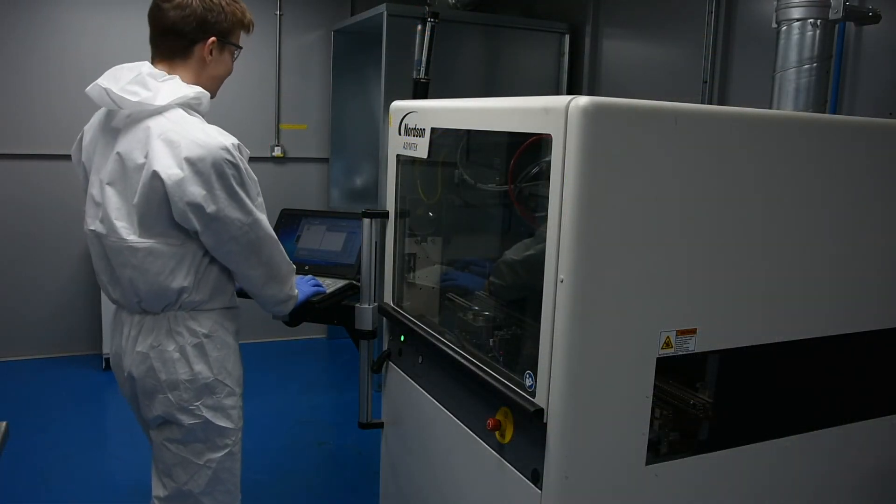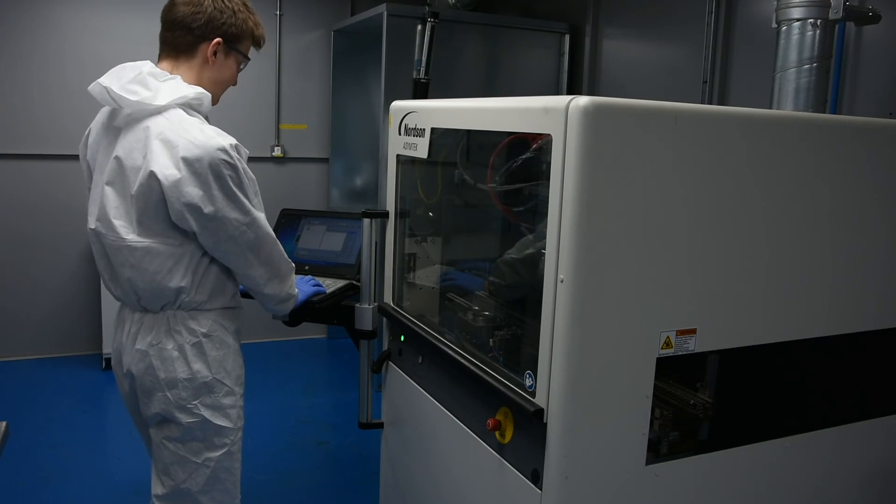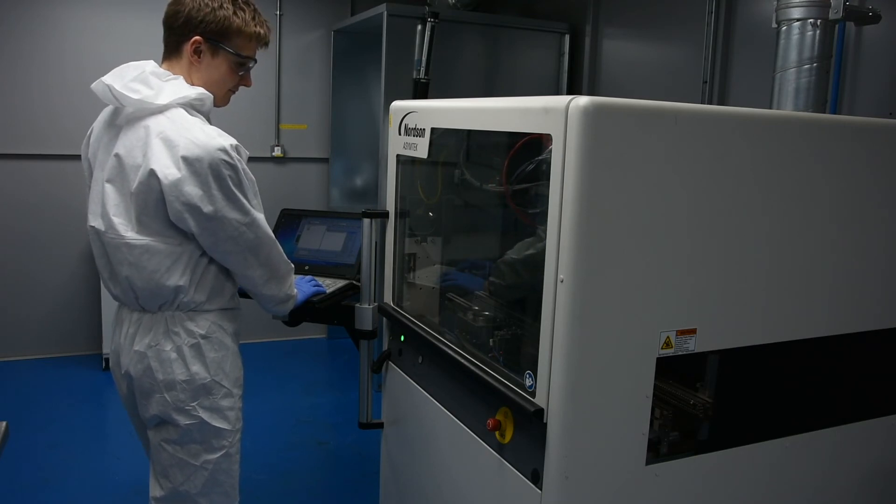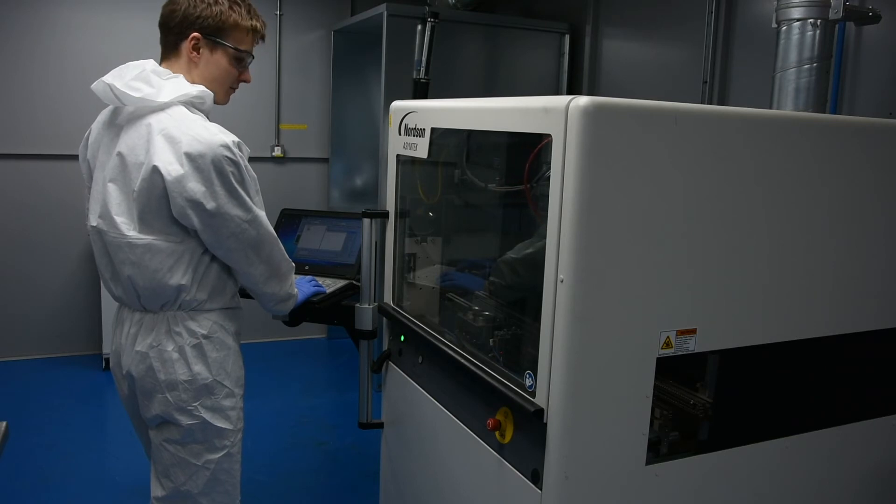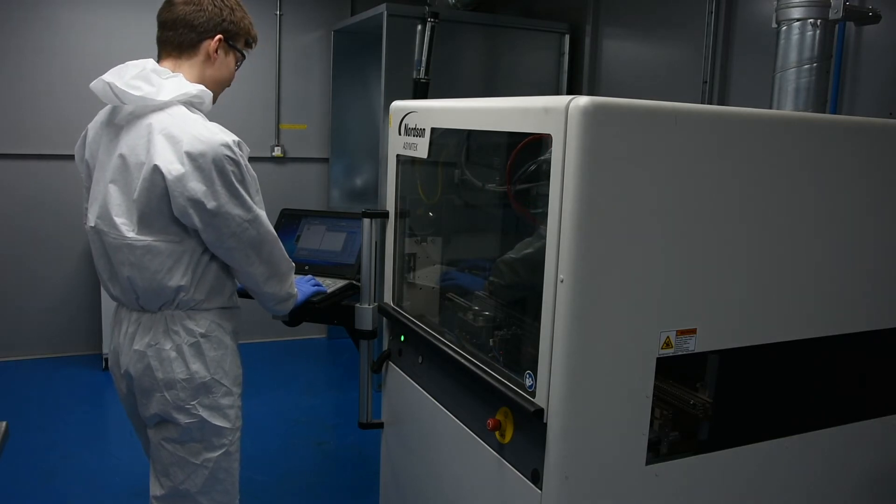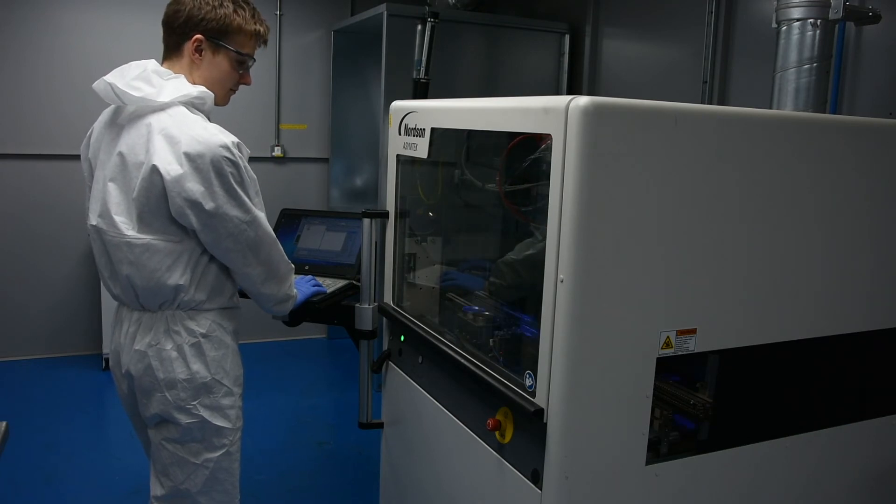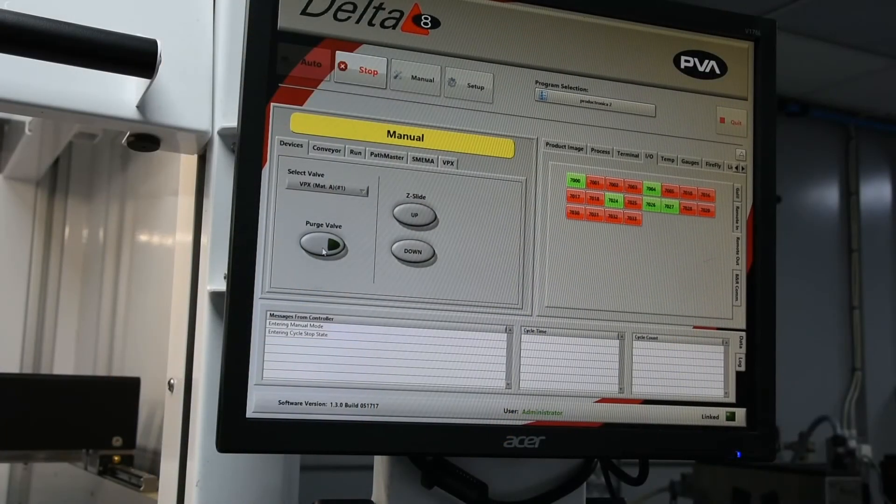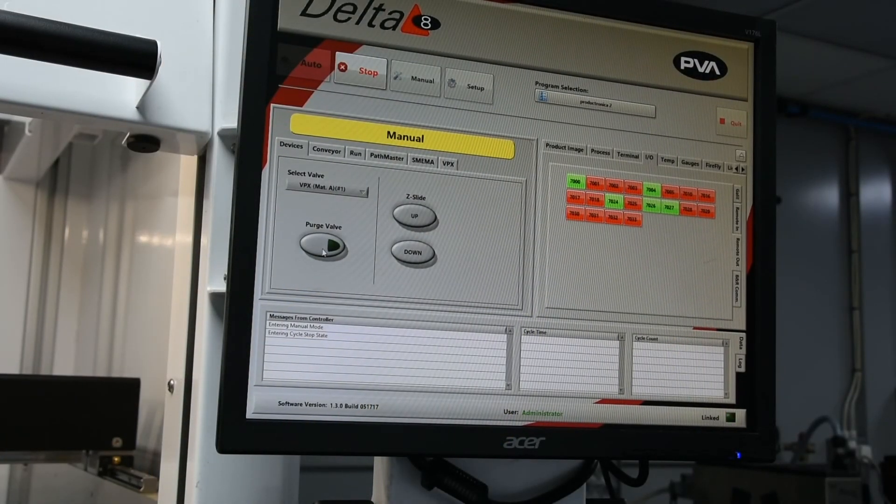Calibration. Your machine supplier will run through the details of how to calibrate the machine with you. However, we wanted to give you a quick overview to highlight the similarities and differences compared to traditional coatings. As an example, we are using the PVA Delta; the Nordson Asymtek and Mycronic setup is very similar.